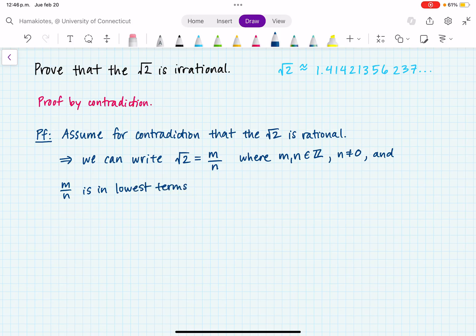So what do we mean by lowest terms? We basically mean that the greatest common divisor of m and n is 1. So this fraction cannot be reduced.